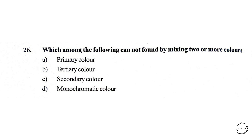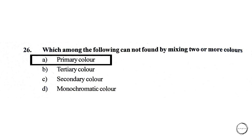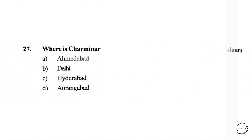Next, which among the following cannot be found by mixing two or more colors? A) primary color, B) tertiary color, C) secondary color, D) monochromatic color. The right answer is option A, primary color.